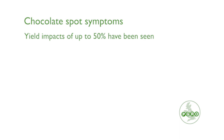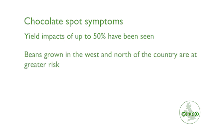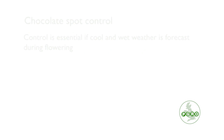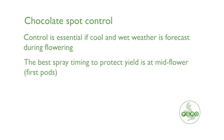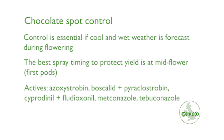Beans grown in the west and north of the country are at highest risk. Control is essential if cool and wet weather is forecast during flowering. The best spray timing to protect yield is at mid-flower, which coincides with first pods. Several actives such as azoxystrobin and boscalid plus pyraclostrobin provide control of chocolate spot.